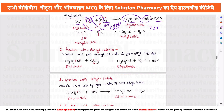The next reaction is with thionyl chloride (SOCl₂). When ethyl alcohol (CH₃CH₂OH) reacts with thionyl chloride, we get an alkyl chloride (CH₃CH₂Cl). SO₂ gas is released, and HCl gas is also released as a byproduct. HCl is a gas here, not a liquid, so the solution will not be acidic.